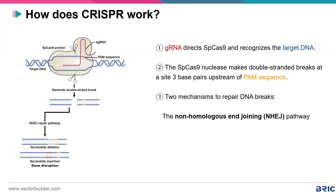Once there is a double-stranded break, two things can happen. The first is non-homologous end joining (NHEJ), a repair pathway where the cell's DNA repair mechanism jumps into action. This pathway is error-prone and can make mistakes — most commonly deletions, and more rarely substitutions and additions. By that mechanism, mutations are introduced at the target site. If this mutation is in a coding region causing a disruption such as a frameshift, it leads to knockout of that specific gene. NHEJ is one of the most commonly used methods to generate a knockout.